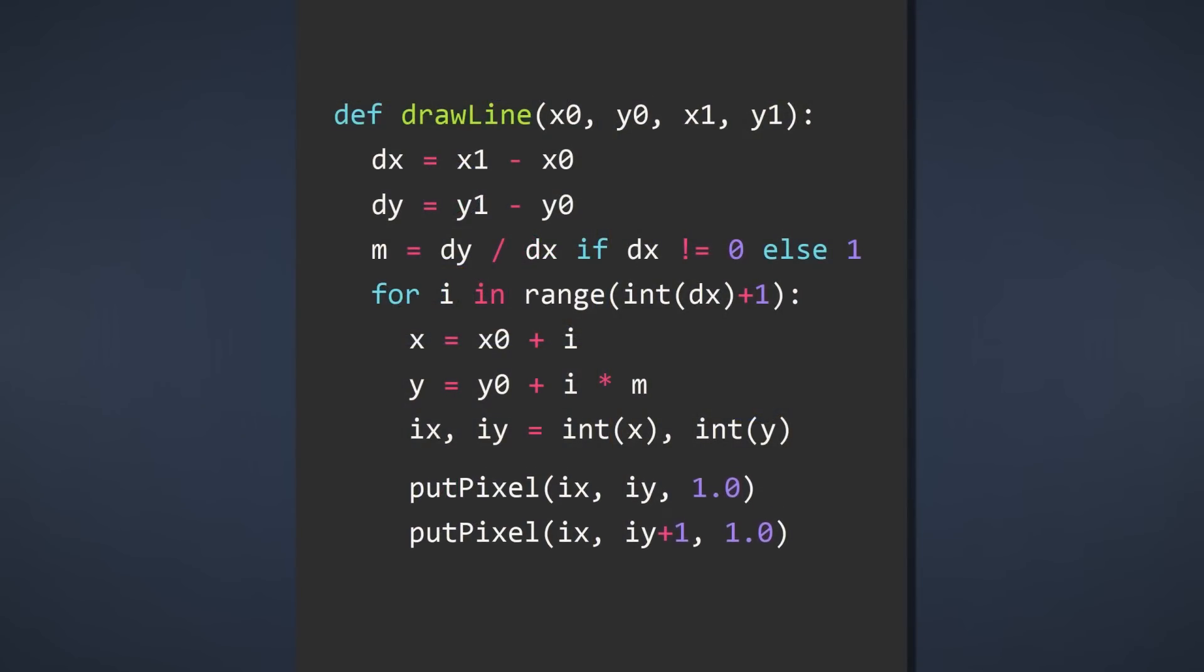The distance to the top pixel is just the plotted y-coordinate minus the integer y-coordinate. In other words, it's the fractional part of our plotted y-coordinate. We can use this distance for the alpha values in the putPixel function.